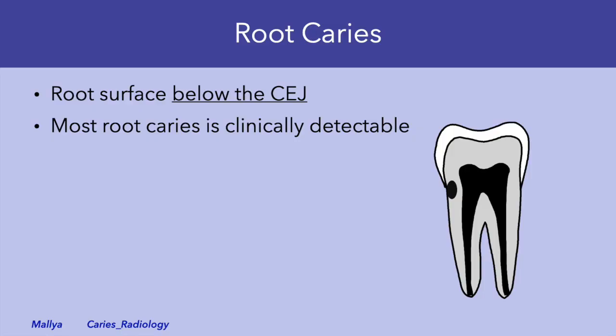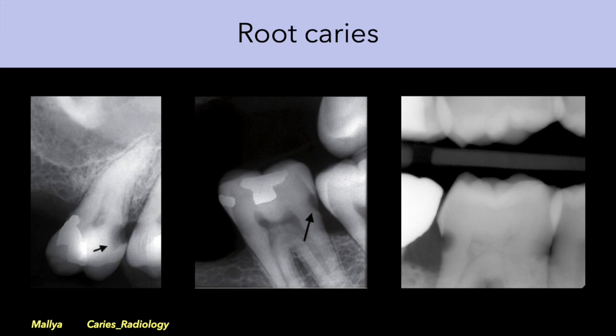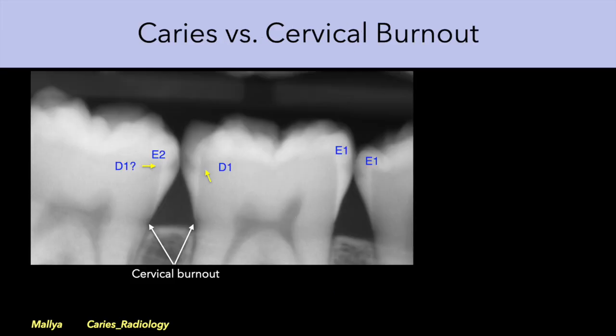Root caries occurs on the tooth surface below the CEJ. Most root caries are clinically detectable, so our diagnostic task when imaging root caries is not to detect the caries, but rather to determine the extent of the lesion and its proximity to the pulp. Note that the origin of the radiolucency appears to be at or below the CEJ, although the radiolucency extends into the coronal dentin. When assessing for root caries, remember to distinguish between root caries and cervical burnout — unlike root caries, cervical burnout is more diffuse and does not have a distinct outline.